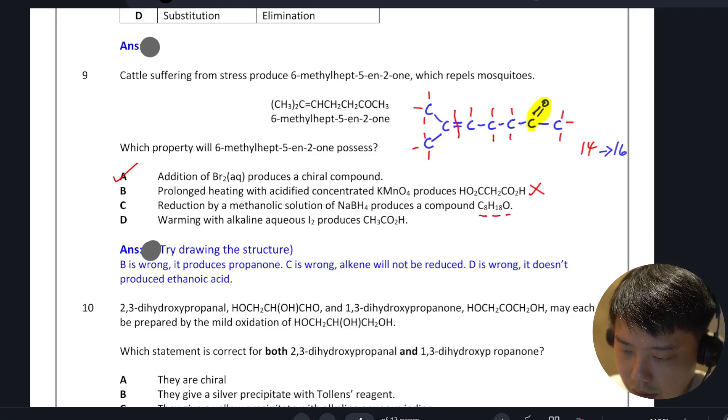Okay, so 18 is not correct. Warming with alkaline aqueous I2—this is the iodoform reaction. Does it produce this product? You don't even need to look at your molecule because this ethanoic acid cannot be in an alkaline medium. Okay, so option D is wrong. Our answer is A.